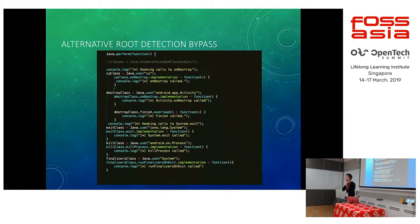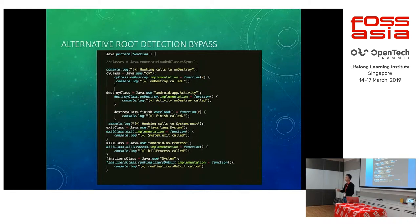There are some alternative ways to do dynamic instrumentation as well. For the method shown before, you have to customize your debug script every single time you want to bypass root detection. This alternative method hooks on some Android system functions, such as Activity or System.exit. When root detection is triggered, it will usually exit the application. So we basically hook those and prevent it from exiting itself.